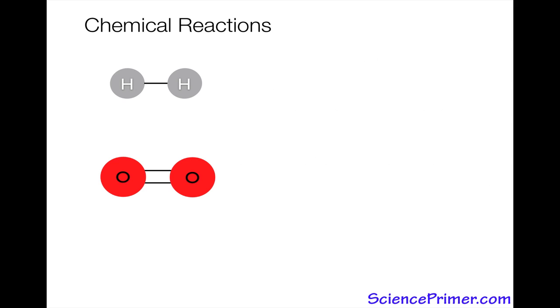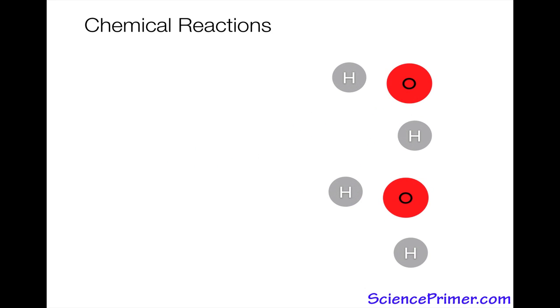When a reaction occurs with these as the inputs, first what happens is the bonds holding the molecules together are broken. The atoms in the molecules are then rearranged and new bonds are formed. This is the general process for all chemical reactions: break bonds, rearrange atoms, form new bonds.